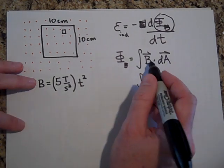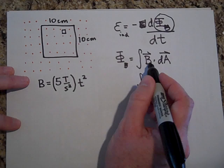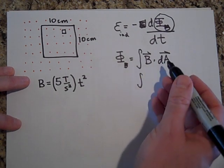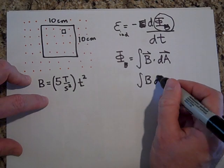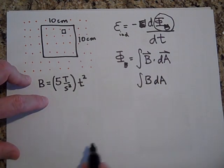Because the dot product says take the part of B that's in the direction of dA and multiply it by dA. That's what the dot product does. It takes the part of B, the component of B, that's in the direction of dA, and it multiplies it by dA. Well, if I do that, that's just going to give me B times dA.